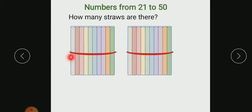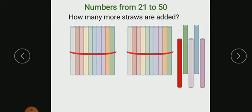Children, observe the picture. How many straws are there here? You have 20 straws. That means how many tens are there? It is 2 tens. If you add 5 more straws, it becomes 25.